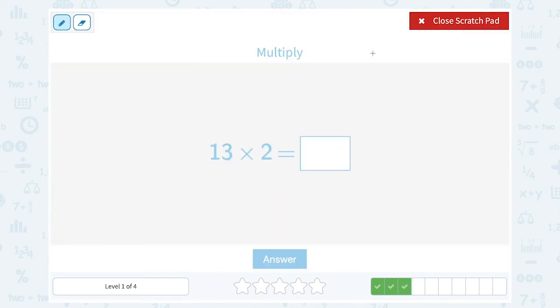13 times two. Now you can write it this way. This one, you might know 13 times two off the top of your head. If you don't, you could always write it out this way and say two times three is six, and two times one is two, which gives me 26.